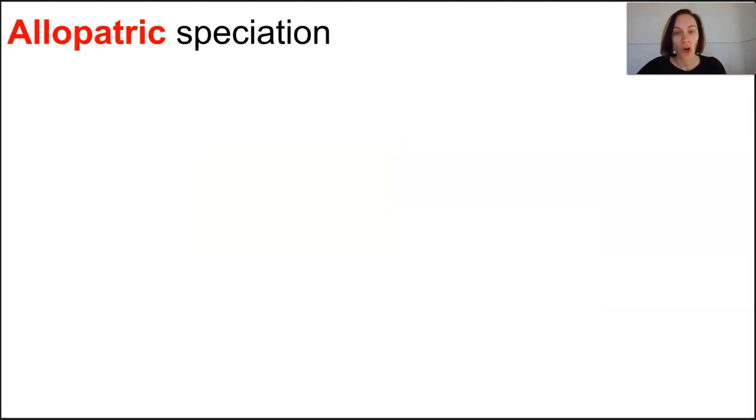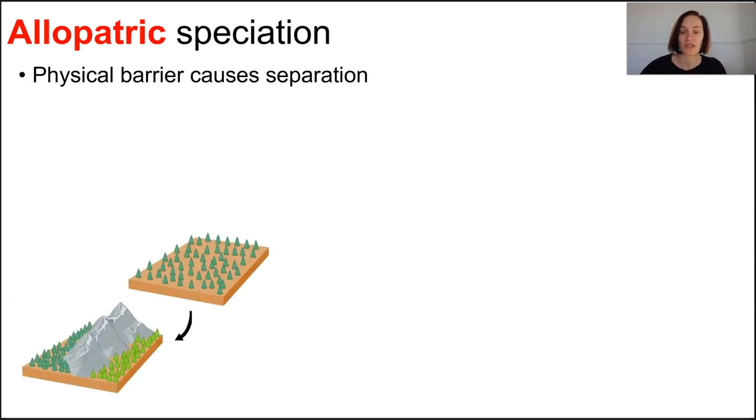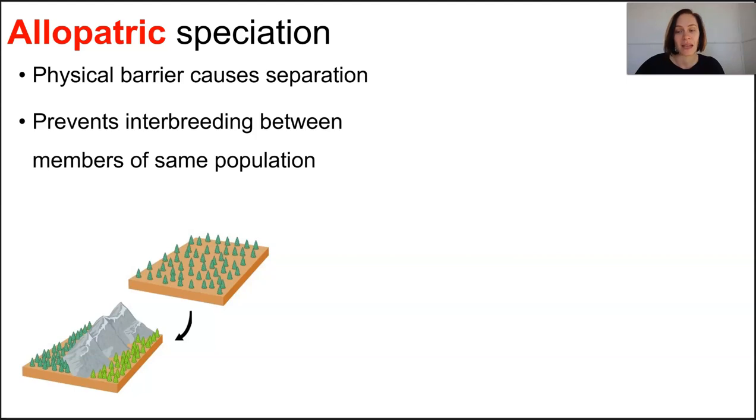Allopatric is the most common mode of speciation and it occurs due to physical separation. We're thinking spatial isolation here, like geographical isolation, as the physical environment changes and prevents interbreeding between members of the same population.